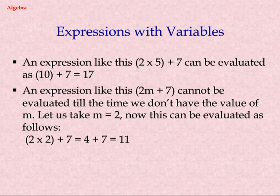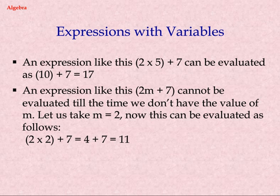Expression with variables. An expression like 2 into 5 plus 7 can be evaluated as 10 plus 7 equals 17. An expression like 2M plus 7 cannot be evaluated until we have the value of M. Let us take M equals 2. Now this can be evaluated as 2 into 2 plus 7 equals 4 plus 7 equals 11.